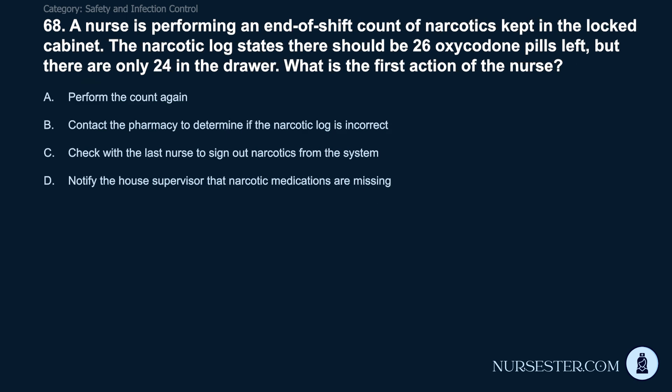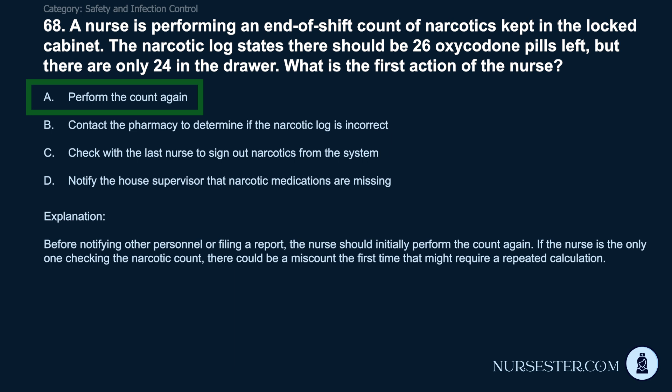Question 68: A nurse performing an end-of-shift narcotic count finds the log states 26 oxycodone pills should be present, but only 24 are in the drawer. What is the first action? A) Perform the count again. B) Contact the pharmacy to determine if the log is incorrect. C) Check with the last nurse to sign out narcotics. D) Notify the house supervisor that medications are missing. Correct answer: A. Perform the count again. Before notifying other personnel or filing a report, the nurse should perform the count again, as there could be a miscount the first time that might require a repeated calculation.